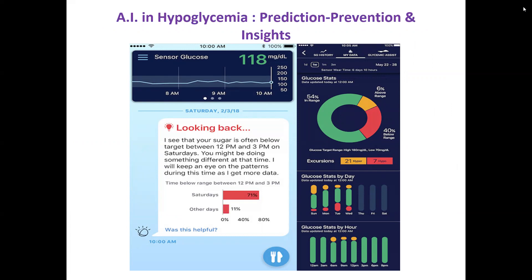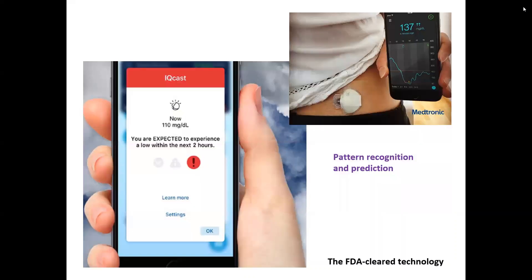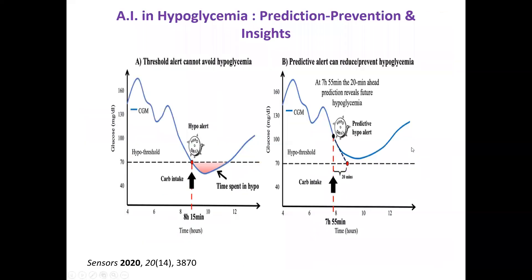One app developed by Medtronic is SugarIQ, a mobile app that integrates with the Guardian Real CGM. Powered by IBM's Watson AI system, it tracks the influence of diet, exercise, activity, time of day, and location. It uses detailed trends to predict hypoglycemia, requires CGM calibration twice a day from a glucose meter and manual food entry, and can share data simultaneously with the healthcare provider.